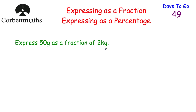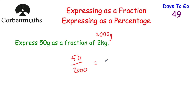Next question says express 50 grams as a fraction of 2 kilograms. We need to convert kilograms into grams — 1 kilogram is 1,000 grams, so 2 kilograms is 2,000 grams. So we express 50 grams as a fraction of 2,000 grams: that's 50 over 2,000. Dividing both by 10 gives 5 over 200. Dividing both by 5 gives 1 over 40. So 50 grams as a fraction of 2 kilograms is 1/40th. If you got that, well done.